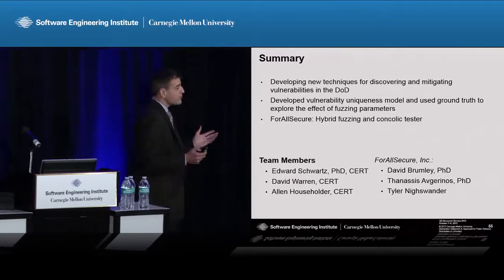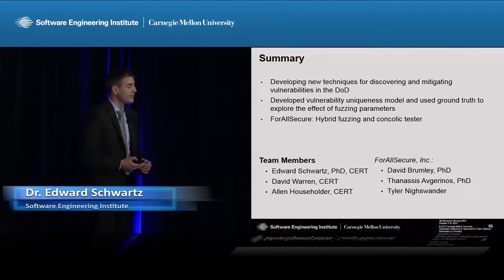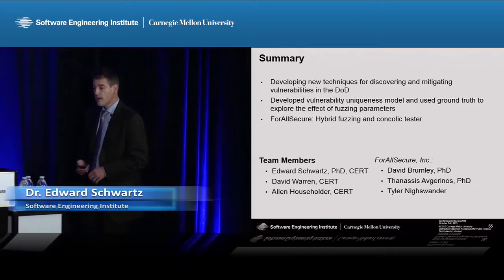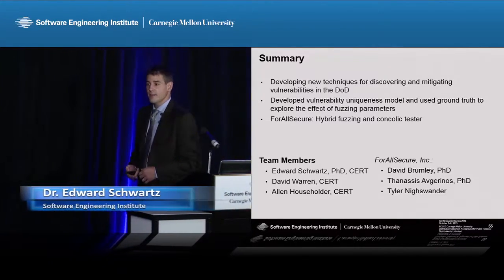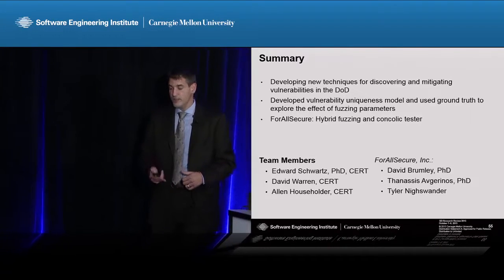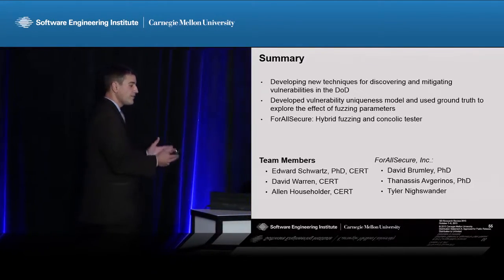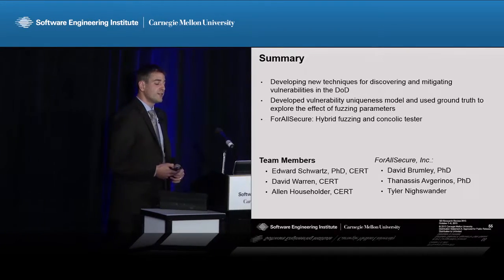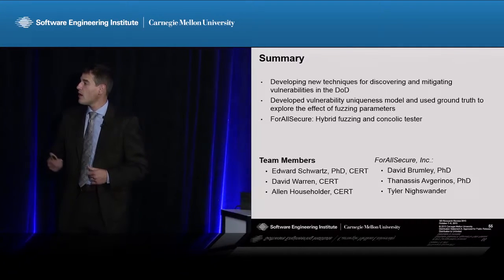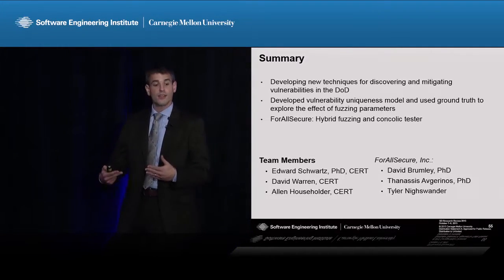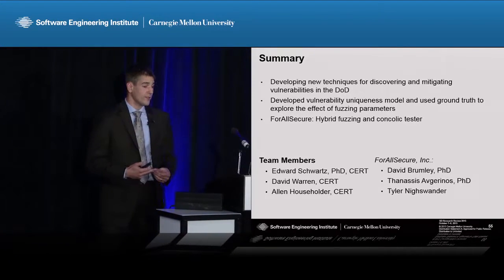To wrap things up, we're trying to create new techniques and improve on existing techniques for finding vulnerabilities in software. I told you about some of our work to generate ground truth data that maps crashes back to the vulnerabilities that cause them, and how we can use that data to make fuzzing and vulnerability discovery into more of a science. I've also talked about our work with For All Secure, where we combined fuzzing and concolic testing to try to improve our vulnerability discovery capabilities.